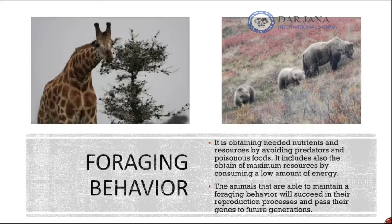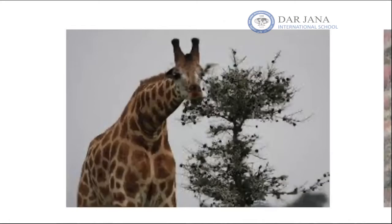Another type of behavior, other than competitive behavior, is foraging behavior. Foraging behavior is obtaining food and all resources in the easiest way while consuming the lowest amount of energy. Animals performing foraging behavior tend to obtain the maximum amount of food in the shortest time, while staying safe from predators. Animals that succeed at foraging reproduce and transmit their genes to future generations.